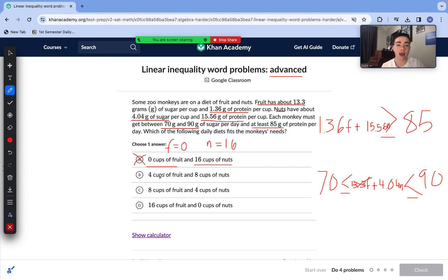Now let's try answer choice B. F equals 4 and N equals 8. So in our first inequality we do 1.36 times 4 plus 15.56 times 8. The value for that is 129.92 which is fulfilling that requirement. It is greater than or equal to 85. Now we need to put it into our bottom inequality. So 13.3 times 4 plus 4.04 times 8. The answer for that is 85.52. It does indeed fulfill this inequality. That means answer choice B is correct here.